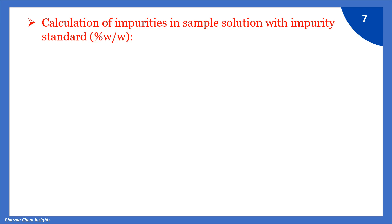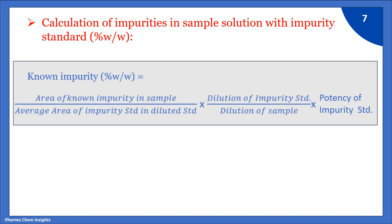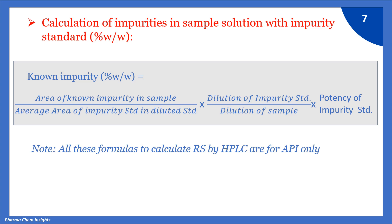The third method is calculation of impurities in sample solution with impurity standards, expressed as percentage weight by weight. In RS there are certain methods where we calculate known impurity against their respective impurity standards. The formula for known impurity (% w/w) is: area of known impurity in sample, divided by average area of impurity standard in diluted standard solution, multiplied by dilution of impurity standard divided by dilution of sample, multiplied by potency of that impurity standard.